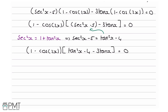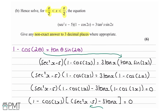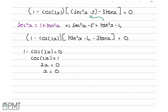From 1 minus cos2x equals 0: cos2x equals 1, so 2x equals arccos(1) which is 0, therefore x equals 0. We need to check this is valid — x must be between minus π/2 and π/2, and 0 is in that range, so x equals 0 is valid.